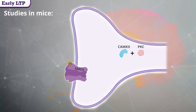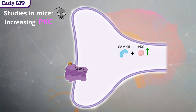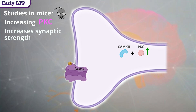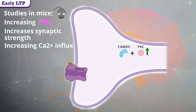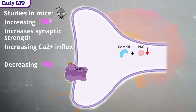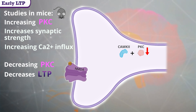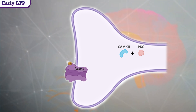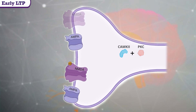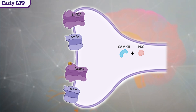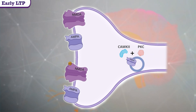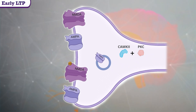Studies conducted on mice found that injecting protein kinase C into the CA1 subfields leads to enhanced synaptic strength by increasing calcium influx, whilst deletion of protein kinase C leads to diminished LTP. This emphasizes that PKC plays an important role in LTP. PKC causes the upregulation of more AMPA and NMDA channels to the post-synaptic membrane, increasing receptor density, by increasing the translocation of AMPA or NMDA receptors already stored and waiting within the cell.